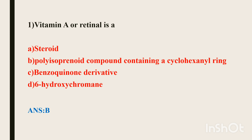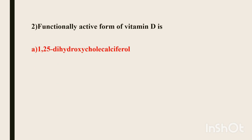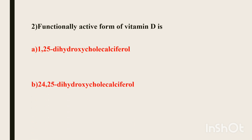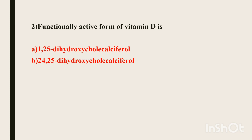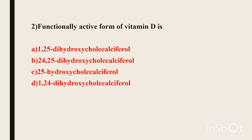Second question. Functionally active form of vitamin D is — Option A: 1,25-dihydroxycholecalciferol. Option B: 24,25-dihydroxycholecalciferol. Option C: 25-hydroxycholecalciferol. Option D: 1,24-dihydroxycholecalciferol. Vitamin D exists in a variety of forms, so we are asked for the functionally active form.